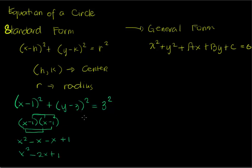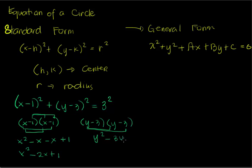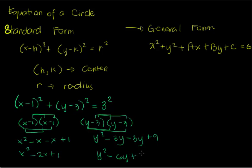For the second term, we do the same pattern with y minus 3 times y minus 3: y times y is y squared, y times negative 3 is negative 3y, negative 3 times y is negative 3y, and negative 3 times negative 3 is positive 9. Simplifying these terms gives us y squared minus 6y plus 9.